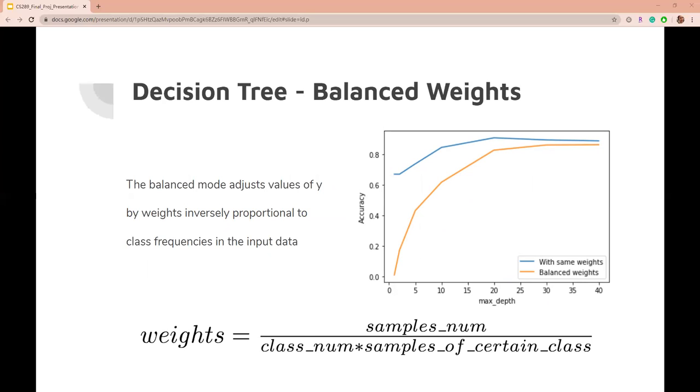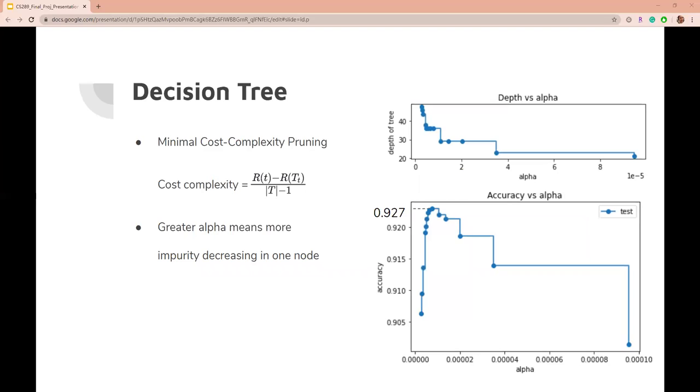However, our test data is imbalanced. Therefore, the imbalanced classifier performs better. We also try minimal cost complexity pruning. We prune unnecessary branches of a complete tree with threshold alpha to avoid overfitting.